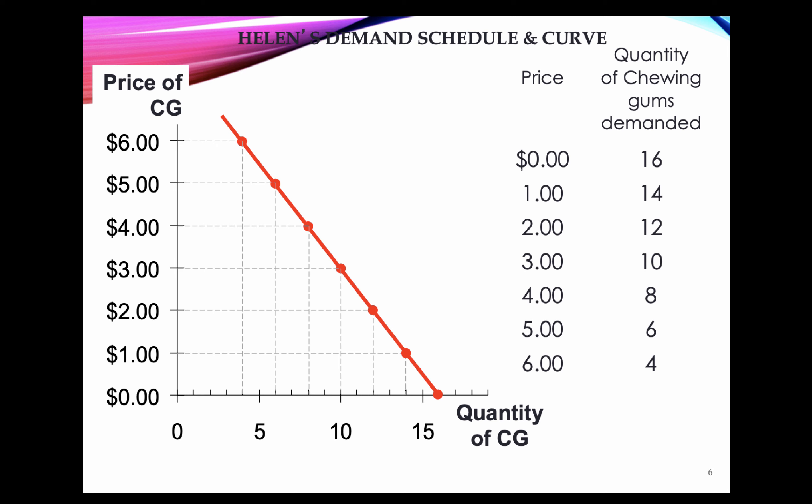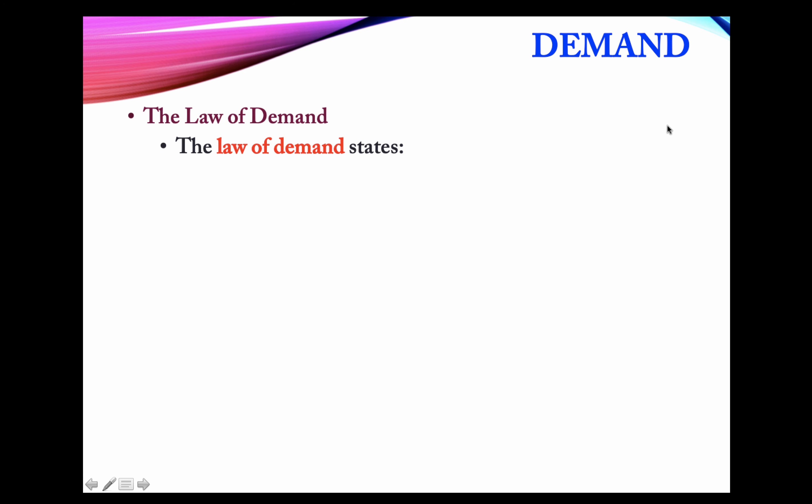When we draw this graph, we assume everything else that can influence the quantity demanded is constant — income, preferences, price of other goods, related goods, and so on. We assume all those things are held fixed when we explore this relationship between price and quantity demanded.